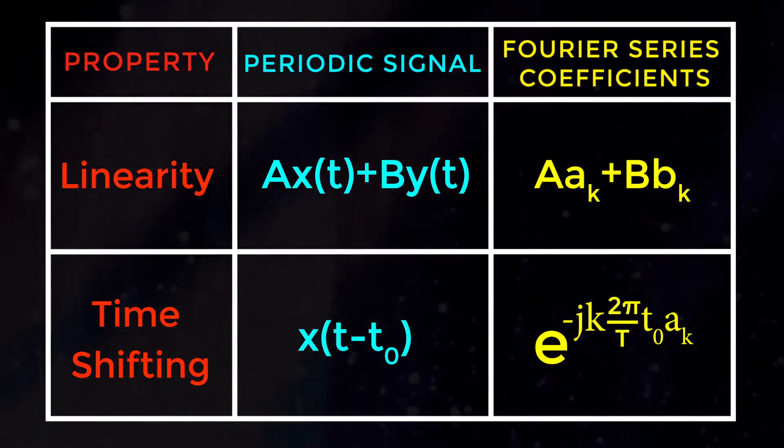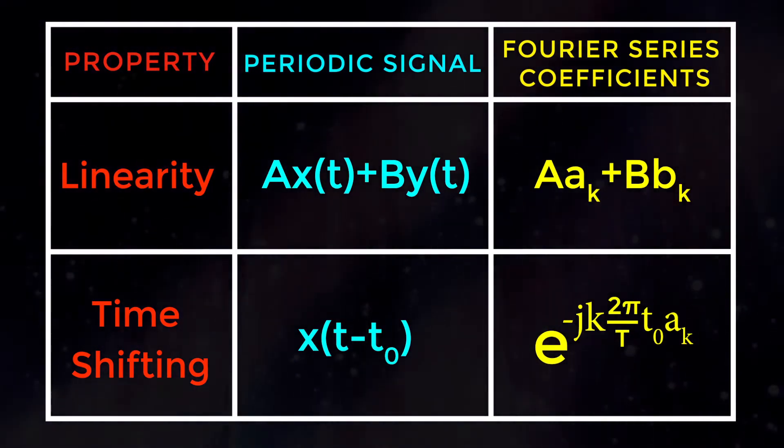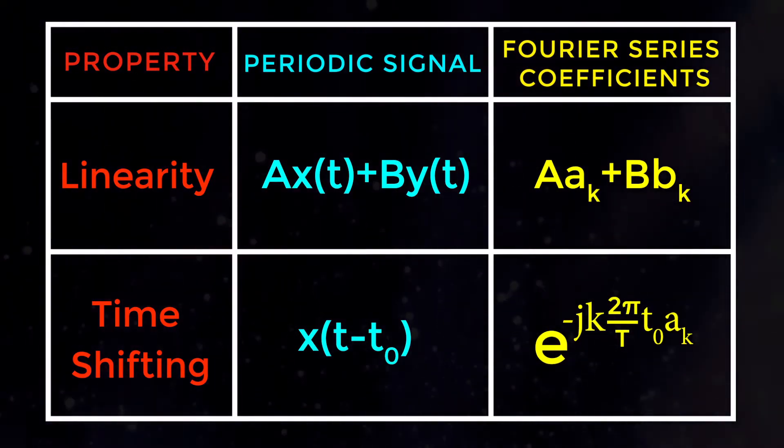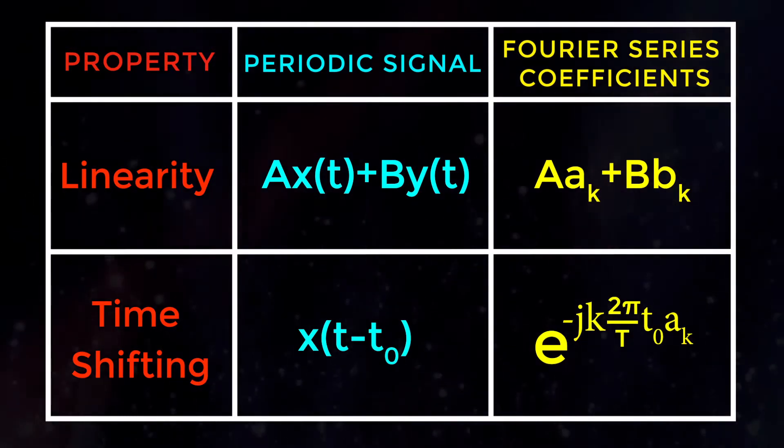For Fourier series coefficients, exponential of minus jk into 2pi by T into t0 into ak.